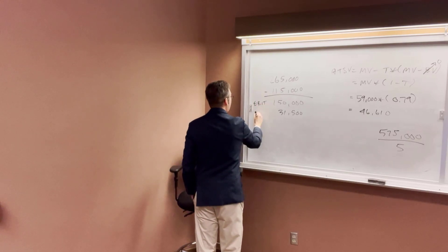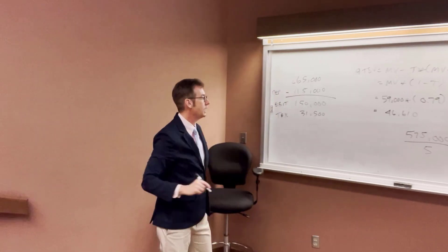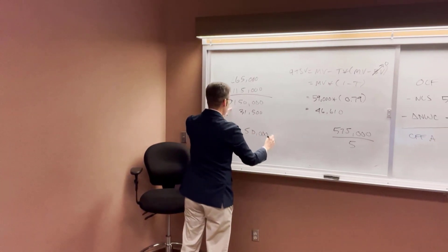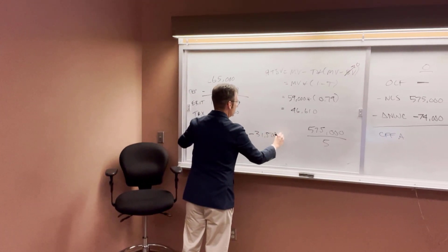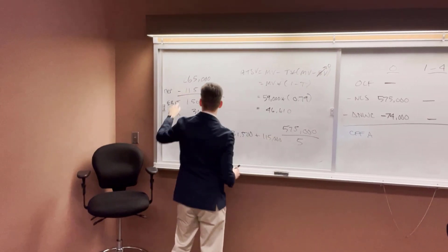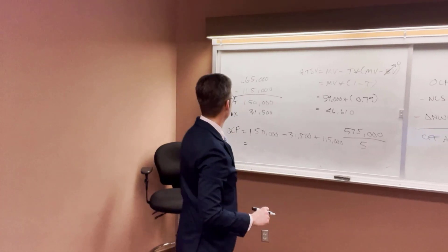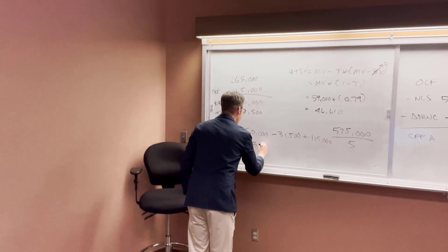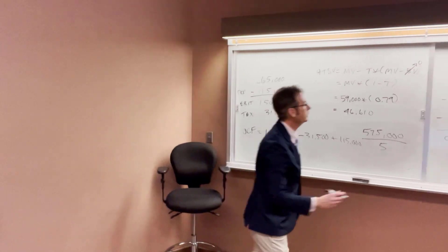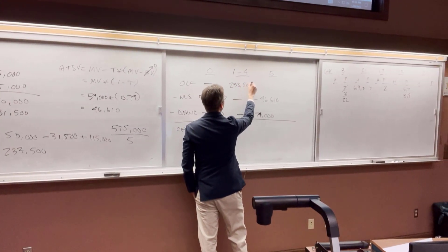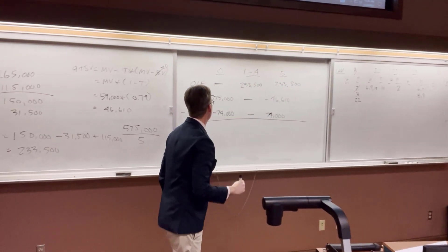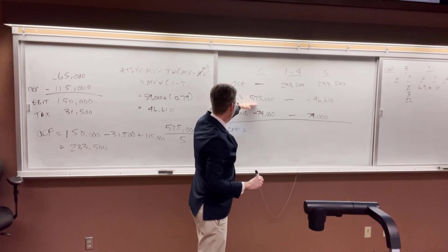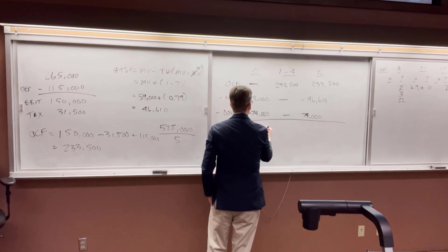OCF equals EBIT minus taxes plus depreciation: $150,000 minus $31,500 plus $115,000 equals $233,500. Year zero cash flow: zero minus $575,000 minus (negative $74,000) = negative $501,000. Year five cash flow: $233,500 plus $46,610 plus $74,000 equals approximately $354,110... let me recalculate — $233,500 plus $46,610 equals $280,110, then plus $74,000 gives $354,110. Wait — it's $233,500 minus (negative $46,610) plus (negative negative $74,000), so year five is $280,110 plus $74,000 for a net of... the calculation gives approximately $206,110.